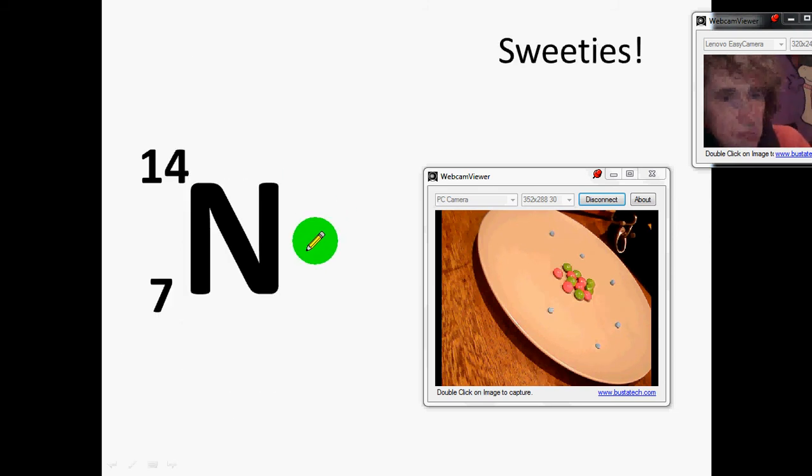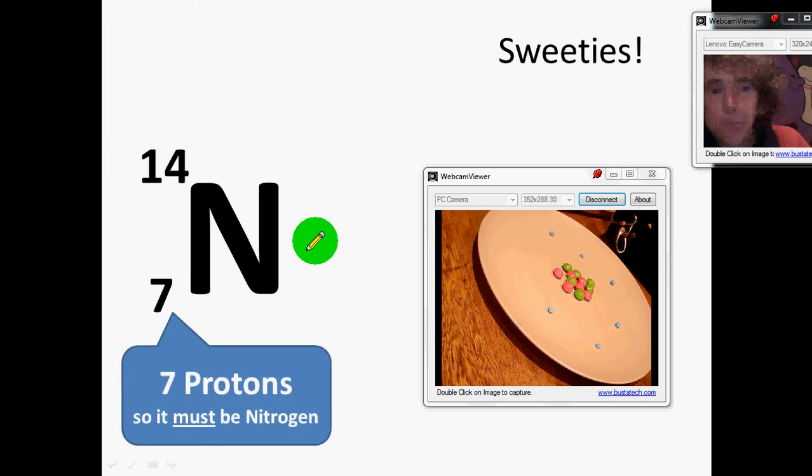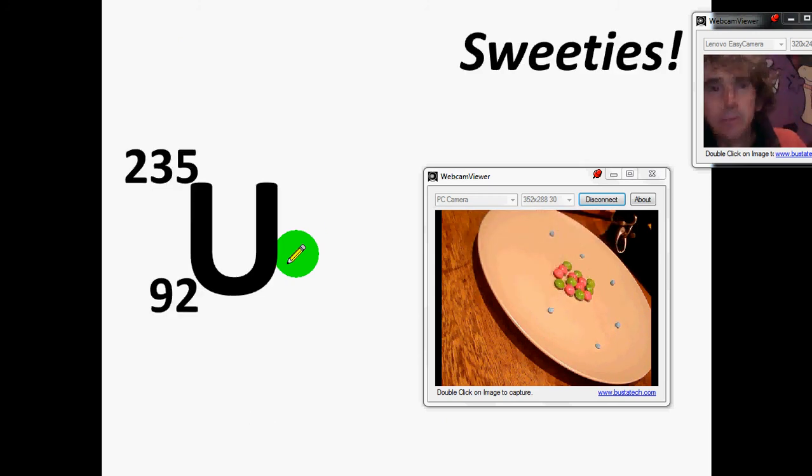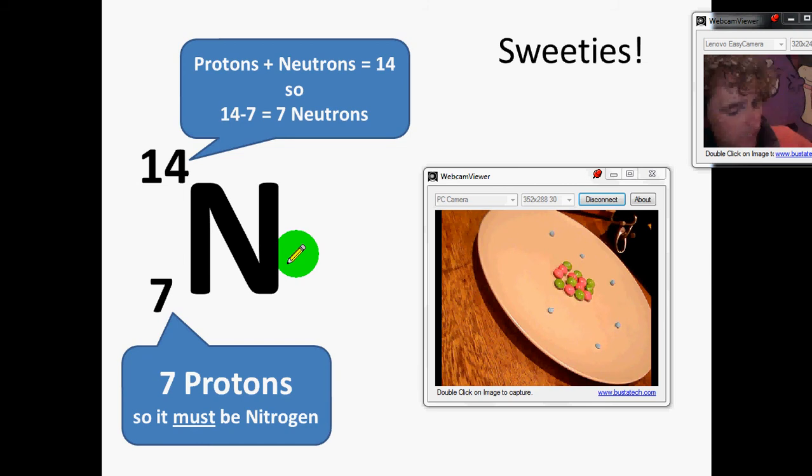Let's do nitrogen then. Well, proton number is 7. The mass number is 14, so I'm going to have to put an extra neutron in there. And of course, we're going to need an extra electron to balance it out.